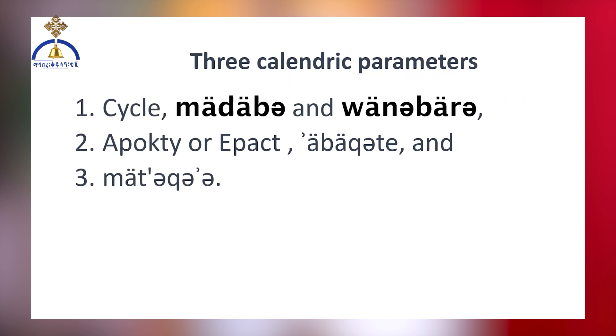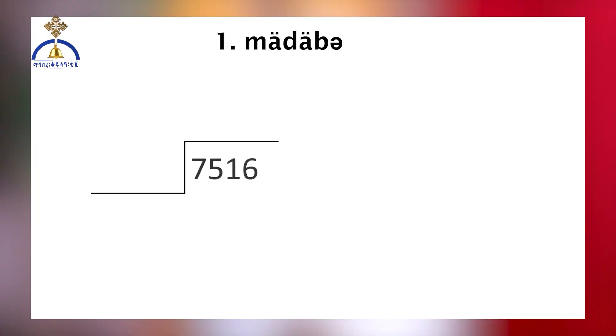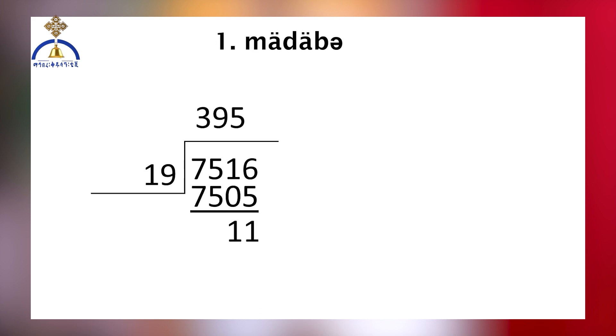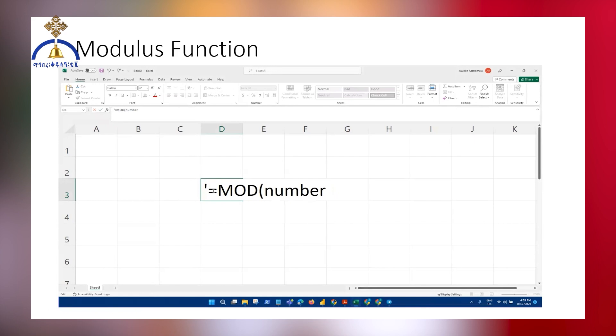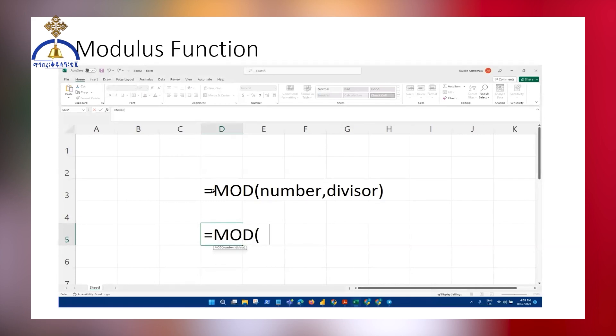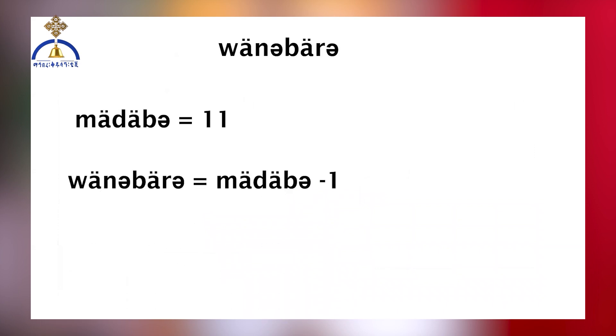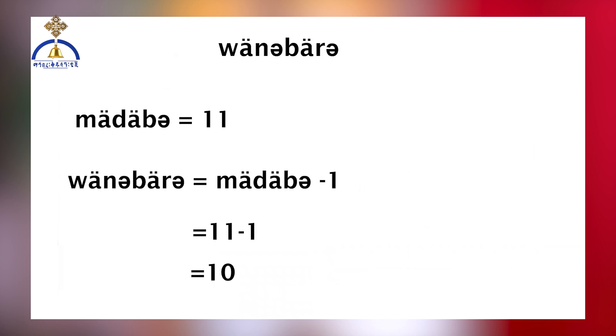These values vary annually and require specific calculations. Once the year of the world has been calculated, the Wembar can be found by dividing it by 19, as a methodical cycle consists of 19 years. For example, when dividing 7,516 by 19, the quotient is 395 with a remainder of 11. The convenient method to calculate the remainder is by using the modulus function in Excel: mod(number, divisor). Applying mod(7516, 19) yields a result of 11. To determine the Wembar value, we subtract 1 from the cycle's remainder, resulting in a Wembar value of 10.